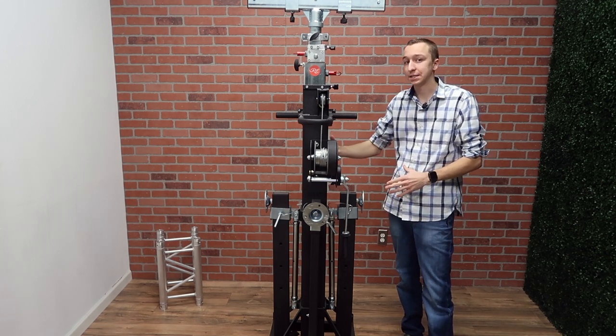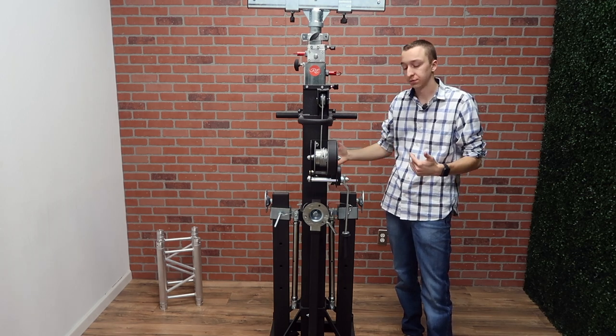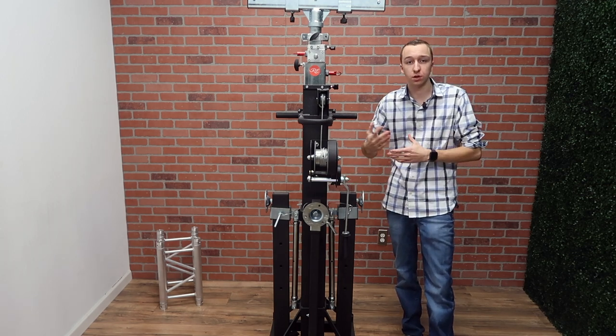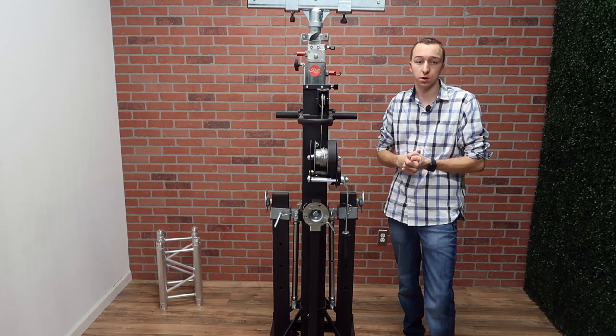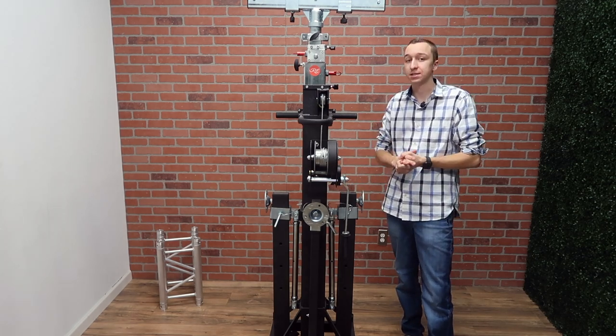So that means when it's fully extended, which it has three different tiers or three different levels that you can extend it to, when it's fully extended you get 18 feet out of it. The base of this thing comes in at 18 inches by 18 inches. The wheels do stick out a little bit, but the base of the structure is 18 by 18 if you're looking to fit it into a truck or a storage facility.